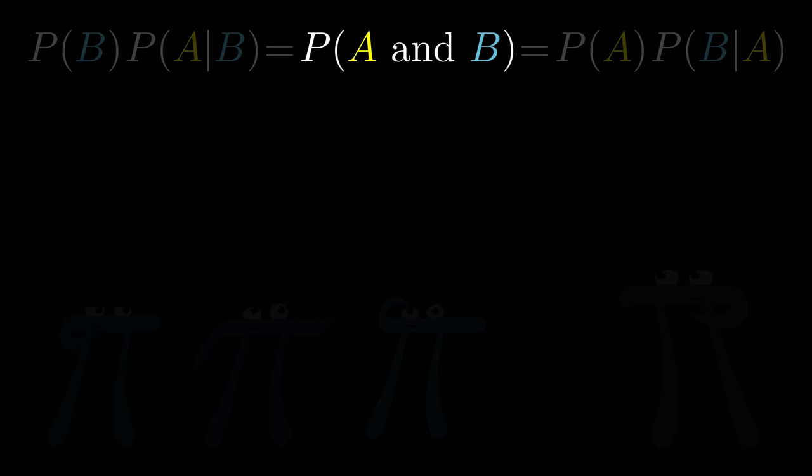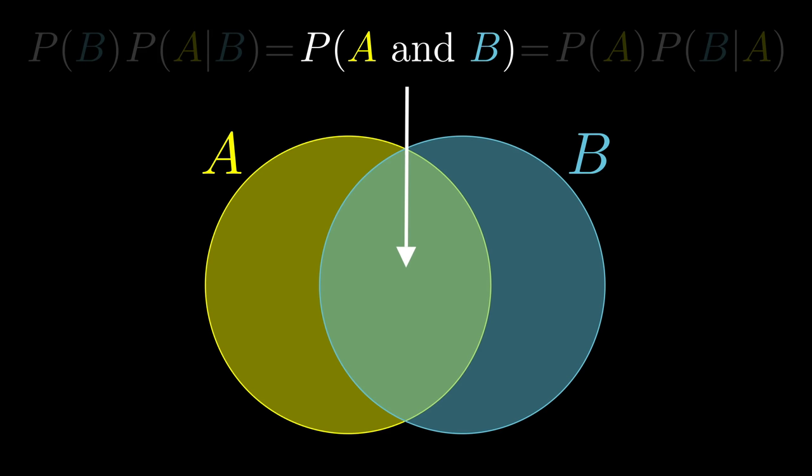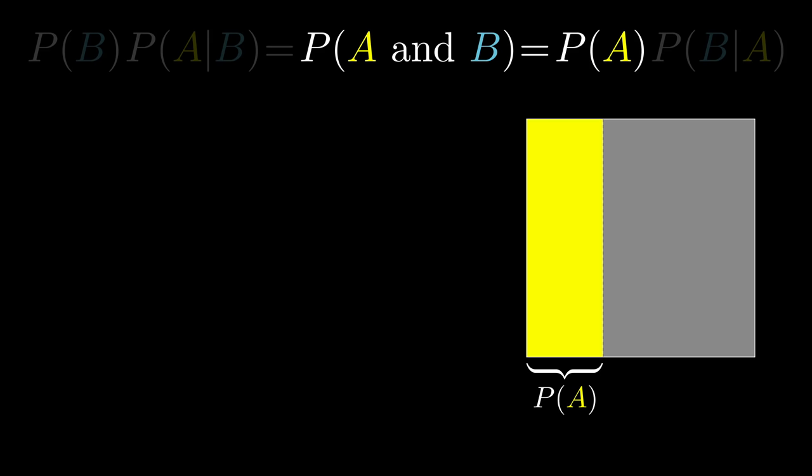Let's say there are two events, A and B. What's the probability that both of them happen? On the one hand, you could start by thinking of the probability of A, the proportion of all possibilities where A is true, then multiply it by the proportion of those events where B is also true, which is known as the probability of B given A.